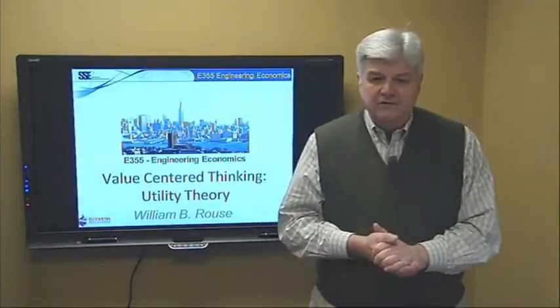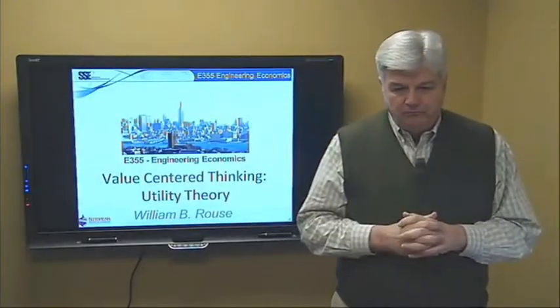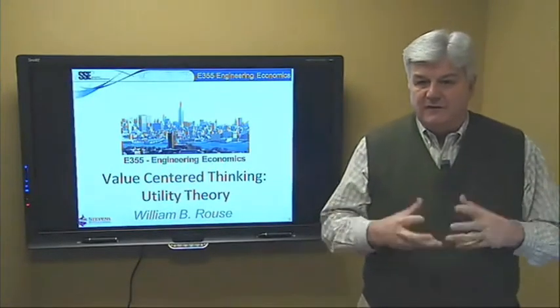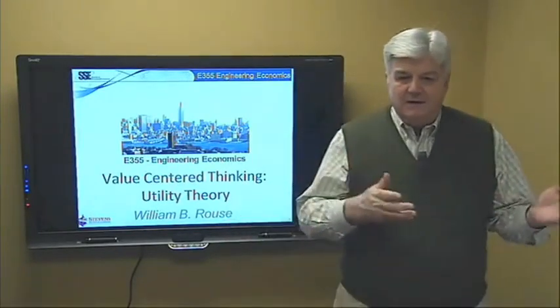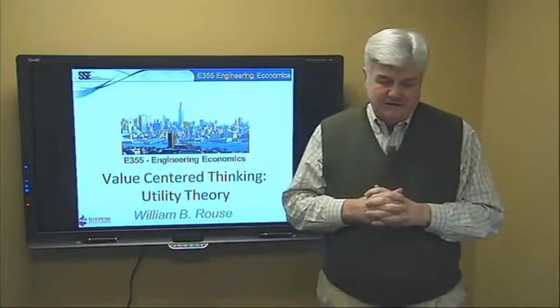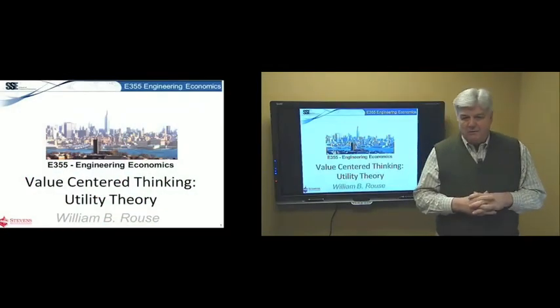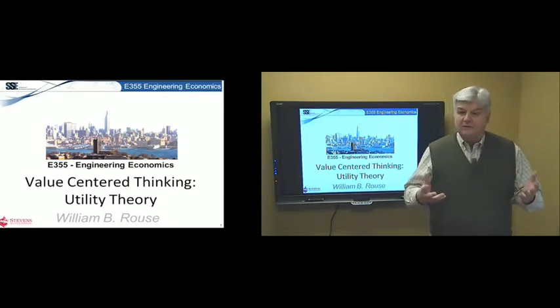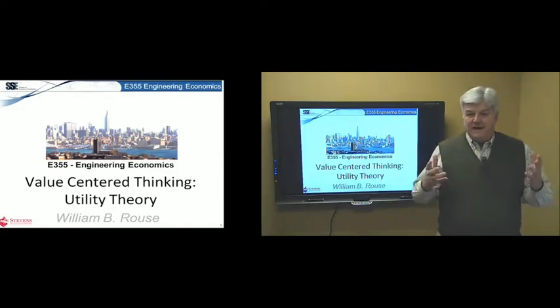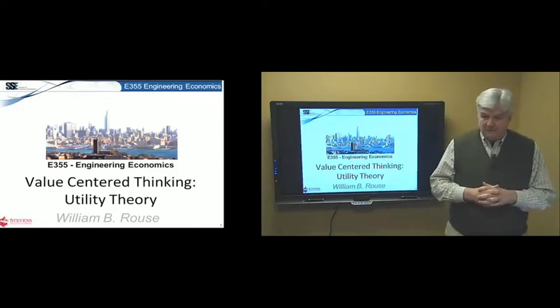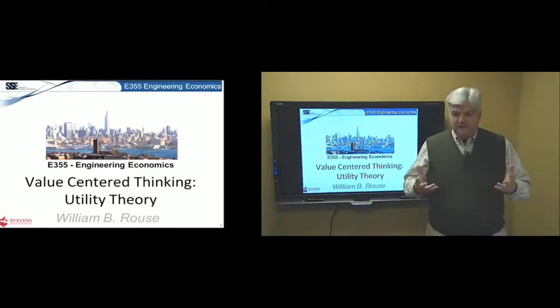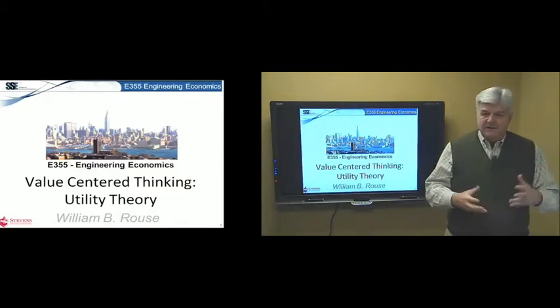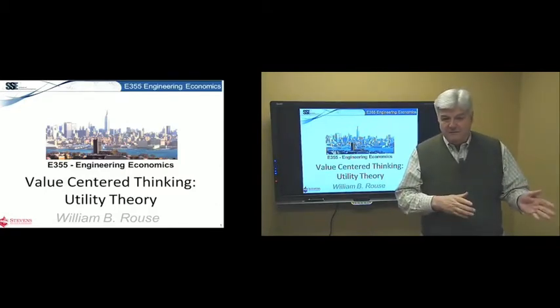In the last lecture, we focused on choosing among alternatives where there is no uncertainty, but we wanted to value alternatives in terms of their attributes. For example, in terms of selecting a job, the salary and the vacation. Now we want to move into cases where we're choosing among alternatives, but the outcomes of choosing those alternatives or the consequences are uncertain. The attributes of those alternatives will have some random variation. The question is how to deal with the risk associated or the uncertainty associated with those random variations. This means we're going to move from value theory to utility theory.